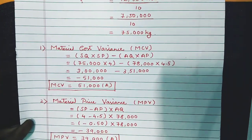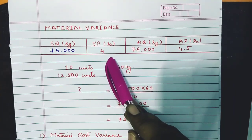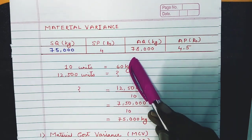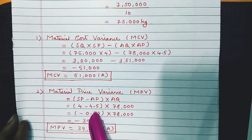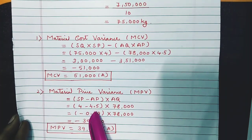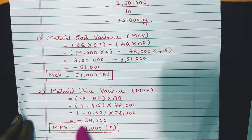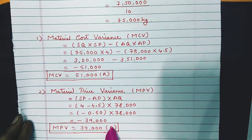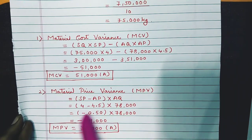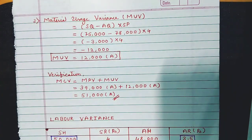Material Price Variance (MPV) formula: (Standard Price − Actual Price) × Actual Quantity. Standard price is 4, actual price is 4.50, actual quantity is 78,000. So: (4 − 4.5) × 78,000 = −0.50 × 78,000 = −39,000. The answer is negative, so MPV = 39,000 Adverse.